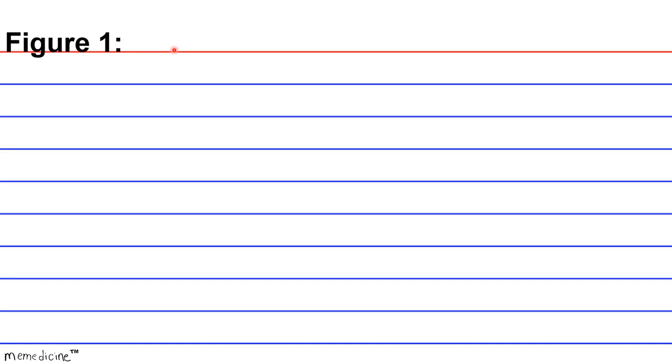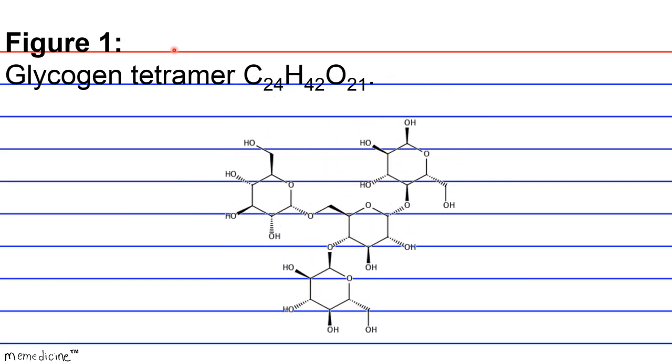Figure 1, Glycogen Tetramer. Take it all in - all the glucose rings, the glycosidic bonds, both alpha-1,4 and alpha-1,6.